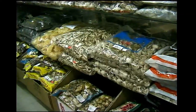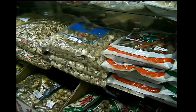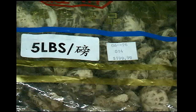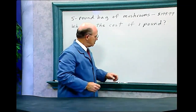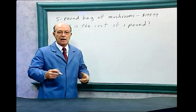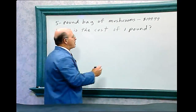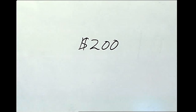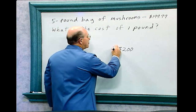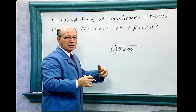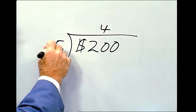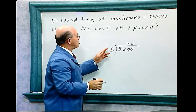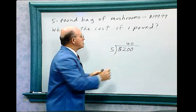I visited Chinatown in Los Angeles and came across a store selling dried mushrooms. If I bought a five-pound bag for $199.99 — we'll round that up to two hundred dollars — how much would I be paying for one pound? We divide $200 by five. Five doesn't go into two, so we take the next number — five goes into twenty four times. Four times five is twenty. Five goes into zero zero times. So one pound of mushrooms costs forty dollars per pound.